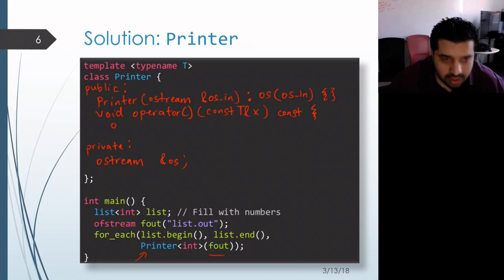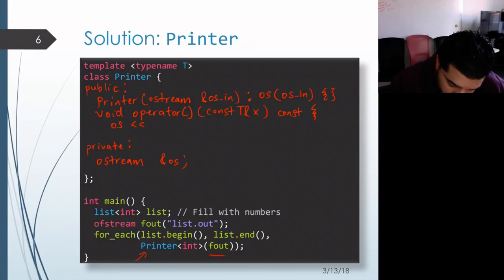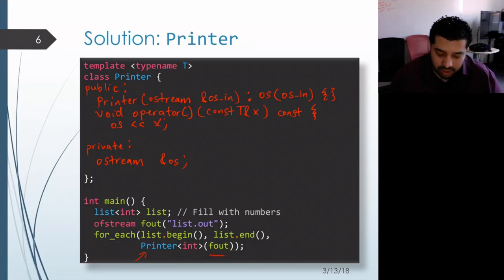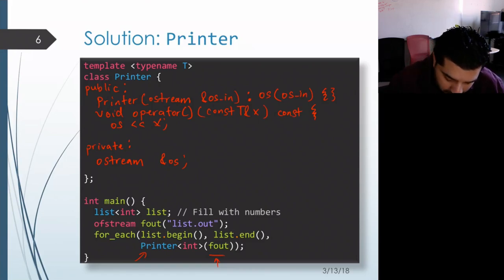In terms of the body, rather than just inserting it into cout, we can insert it into our saved OS variable. And again, OS aliases the output stream that was passed into the constructor. So if we have fout passed into the constructor, OS will be an alias for that, and then X will get printed out to that output stream.